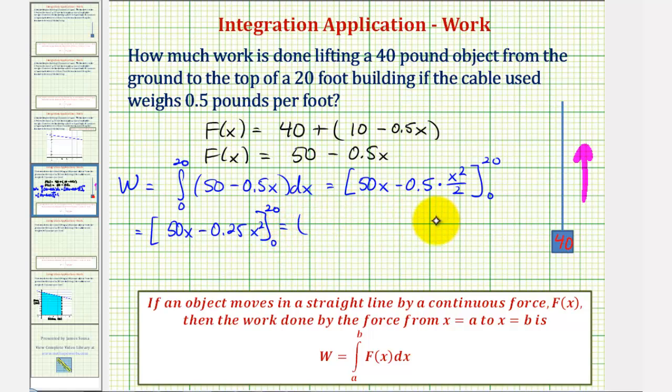And now we'll evaluate this at 20 and then at 0. Well, when x is 20, we have 50 times 20 minus 0.25 times 20 squared. And then when x is 0, we have 0 minus 0, which is just 0.